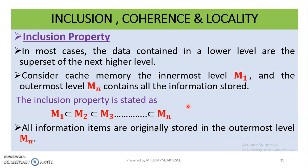From the hard disk, you can copy data to the next higher level. Then from the higher level, you can copy data to the main memory. From the main memory, you can copy data to the cache memory. This is the inclusion property.